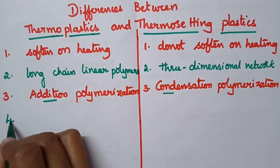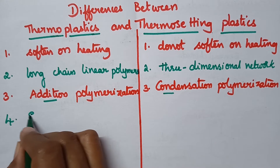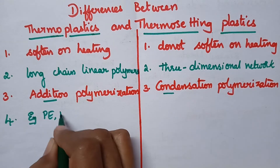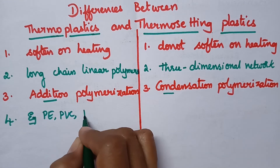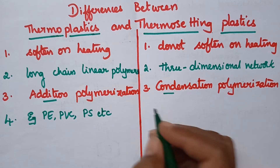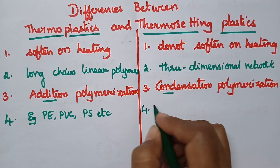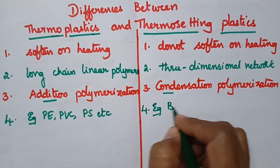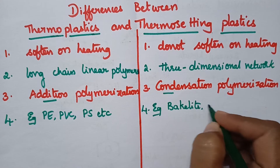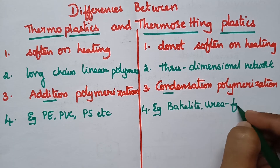Good examples of thermoplastics include polythene, polyvinyl chloride, polystyrene, etc. Whereas thermosetting plastics include Bakelite, urea formaldehyde resin, etc.